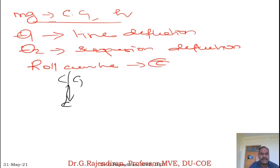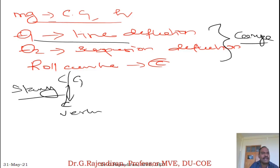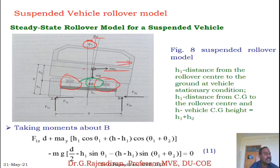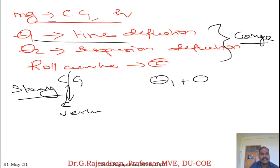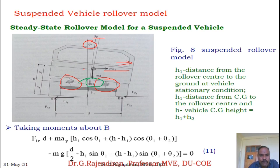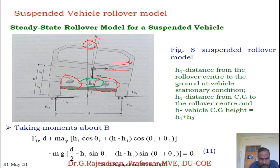The total angle of deflection equals theta one plus theta two. For a stationary vehicle, the centre of gravity and roll centre line coincide vertically. During cornering, theta one is due to tyre deflection and theta two is due to suspension deflection. F1Z and F2Z are vertical loads on inner and outer wheels; F1Y and F2Y are cornering forces at the tyre contact patch. Taking moments with respect to point B: F1Z·D equals M·Ay.